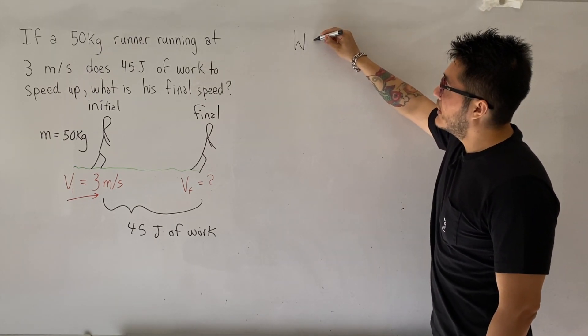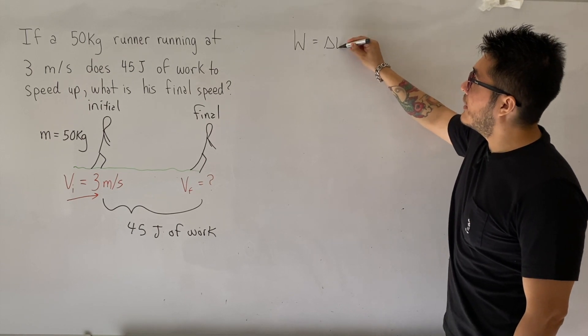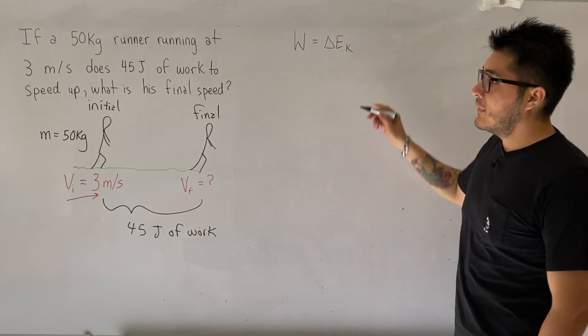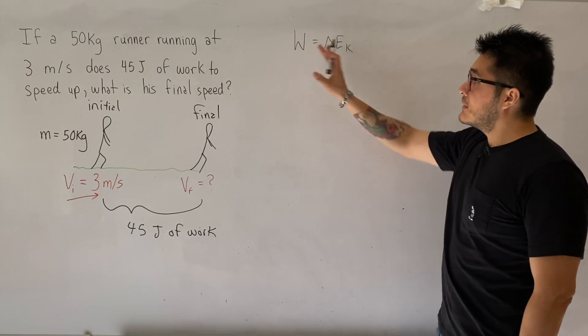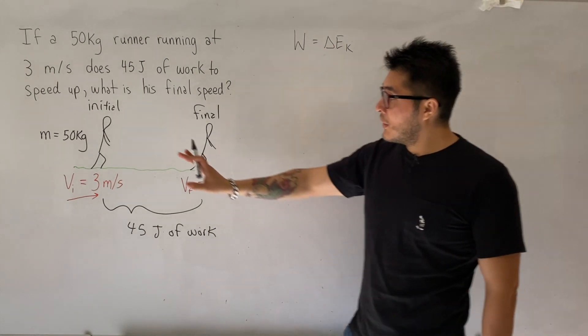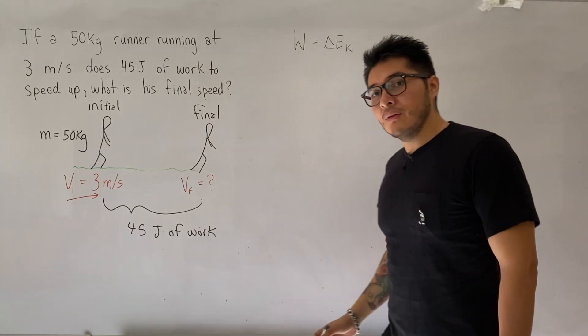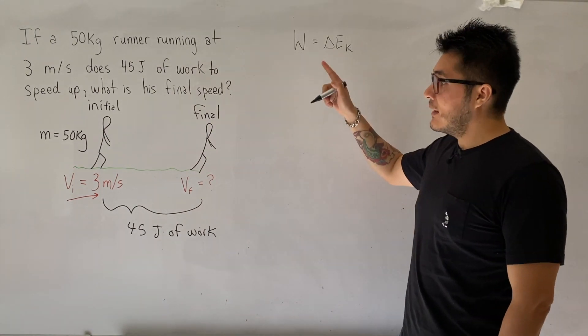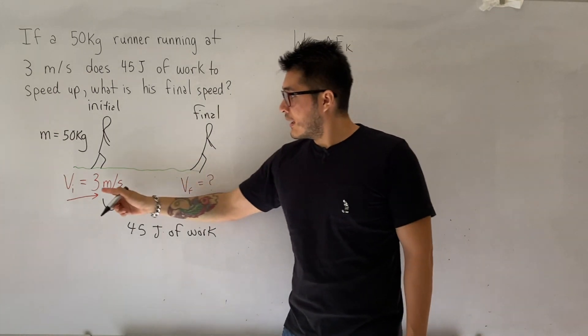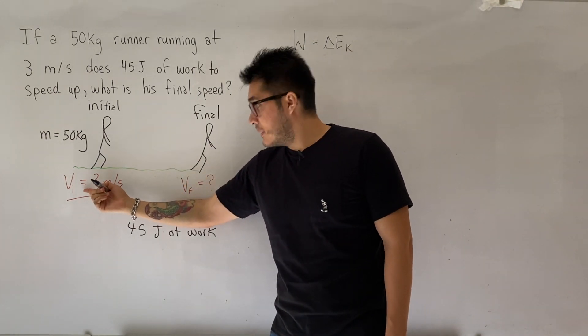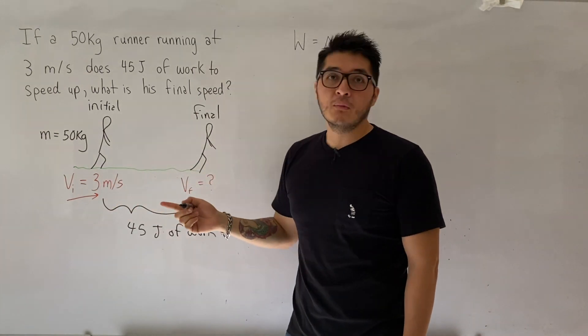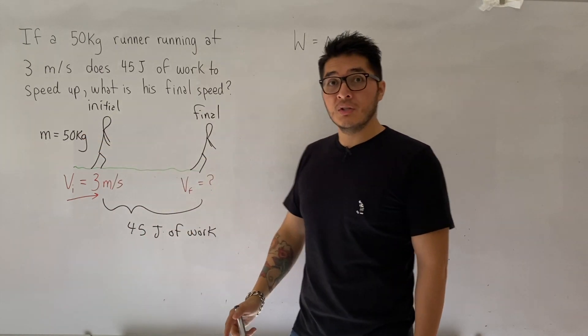the work done is equal to the change in the object's kinetic energy. Now, the reason why this theorem is so powerful is because we no longer need to know what are the forces acting on the runner. We don't even care. All we need to know to calculate the work done is the change in the kinetic energy, which is the change in the velocity, more or less, because the mass is not going to change in this one.